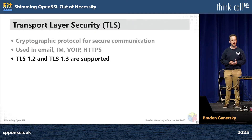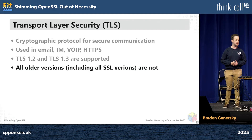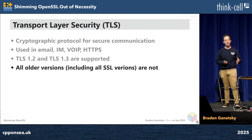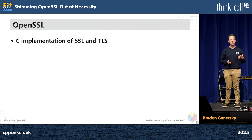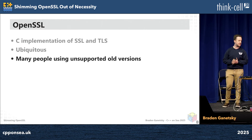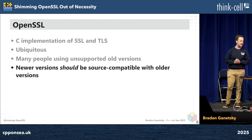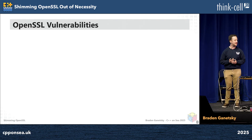TLS 1.2 from 2008, TLS 1.3 from 2018 — these are still supported. All older versions are no longer supported, so if you're using anything earlier than that, you probably shouldn't be doing that. But this is actually about OpenSSL specifically, which is the C implementation of SSL and TLS. It is quite ubiquitous. There are many people using unsupported old versions. Newer versions should be source compatible with older versions, but I'm going to demonstrate a problem where that's not the case.